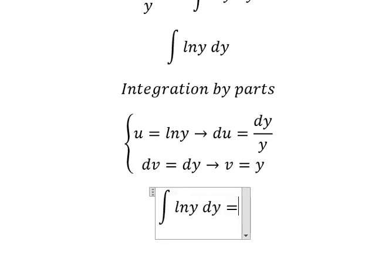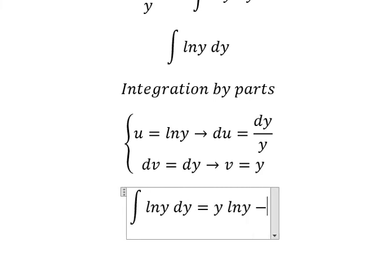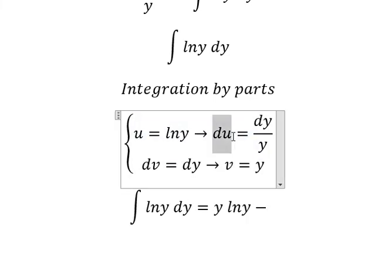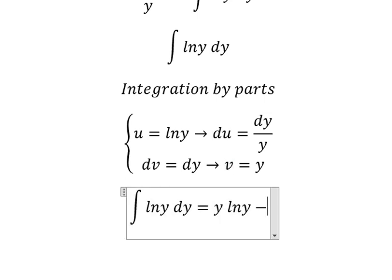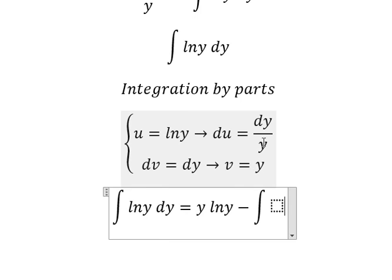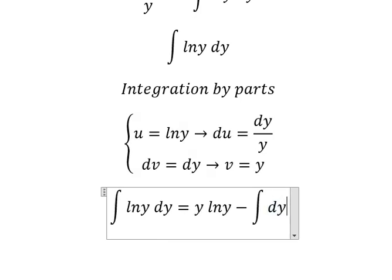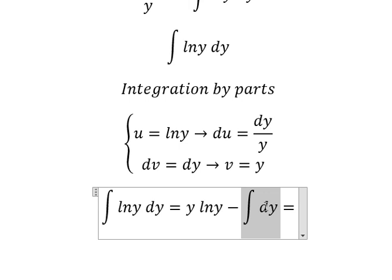We have u multiplied by v, so we have y ln y minus the integration of v du. So y divided by y gives dy. The integration of dy, you got y.